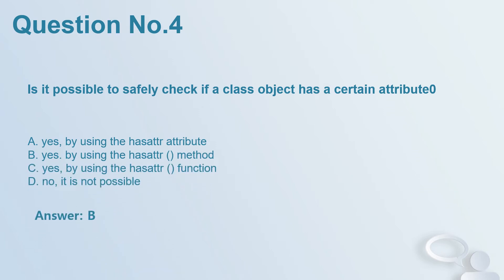Question number 4. Is it possible to safely check if a class object has a certain attribute? A. Yes, by using the hasattr attribute. B. Yes, by using the hasattr method. C. Yes, by using the hasattr function. D. No, it is not possible. Answer: B.